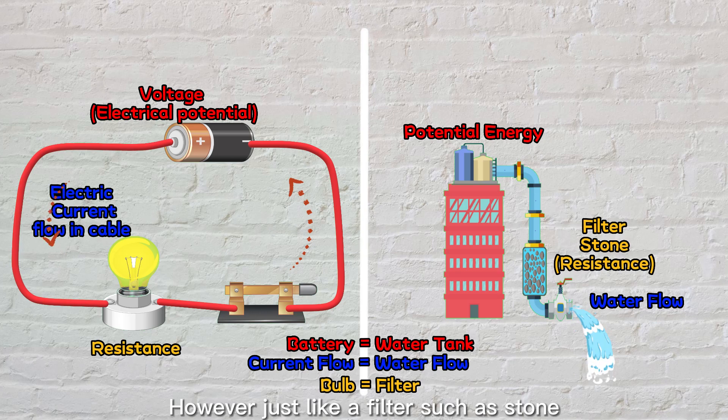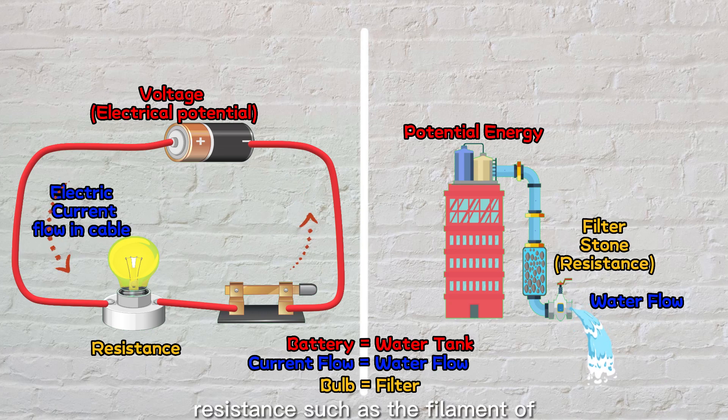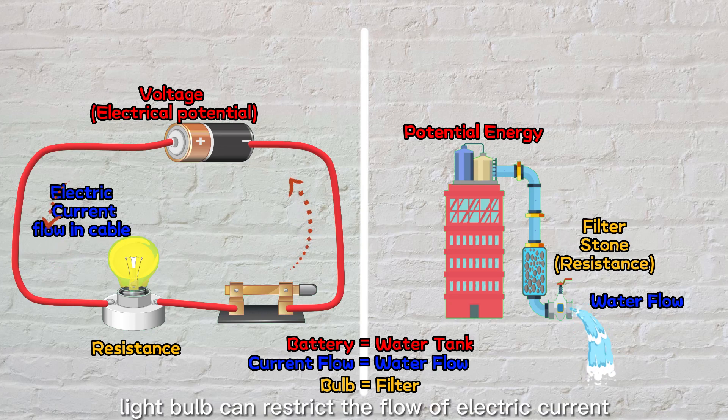However, just like a filter, such as stone, in a water pipe can restrict the flow of water, resistance such as the filament of a light bulb can restrict the flow of electric current.